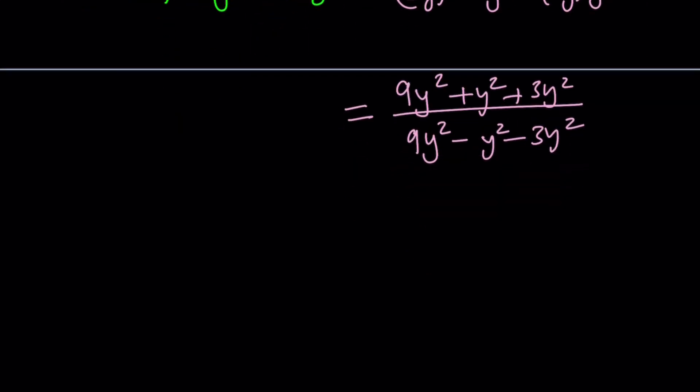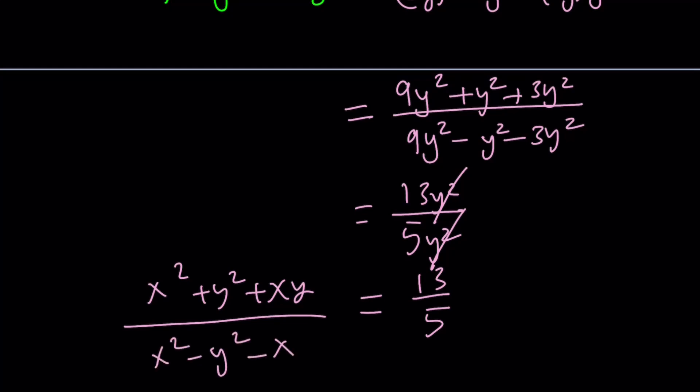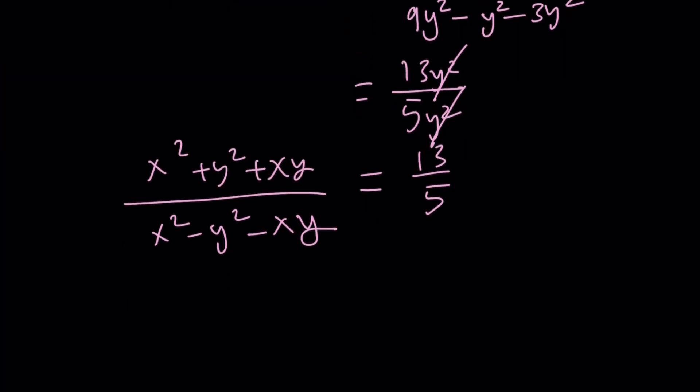This is going to be 9 plus 1, 10, plus 3 is 13y squared, and the 9 minus 1 is 8, 8 minus 3 is 5, that is 5y squared, and the answer is going to be 13 over 5, as long as y does not equal 0. And we know that it is not equal to 0. So our expression in this case, when xy does not equal negative 1, is going to equal the numerical value 13 over 5.